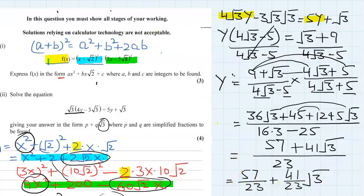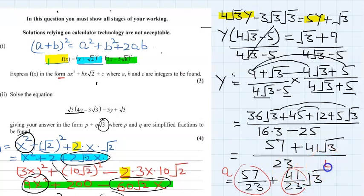We can see the answer is correct because we are getting √3 terms. Writing in a + b√3 form: y = 57/23 + (41/23)√3. So the value of A is 57/23 and the value of B is 41/23. Thanks for watching.